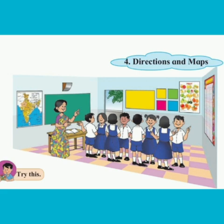For example, if the blackboard is to your right, it will be to the left of your friend facing you. It is difficult to understand the location of an object based on answers like on the right, on the left, in front of, or behind.